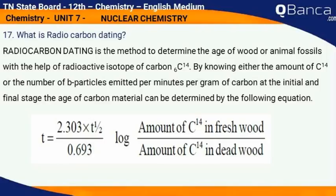What is radiocarbon dating? Radiocarbon dating is a method to determine the age of wood or animal fossils with the help of radioactive isotope of carbon C-14. By knowing either the amount of C-14 or the number of beta particles emitted per minute per gram of carbon at the initial and final stage,